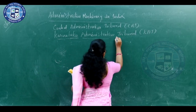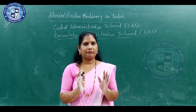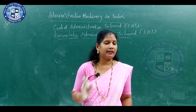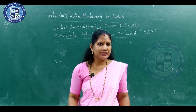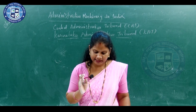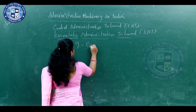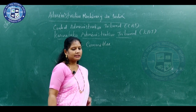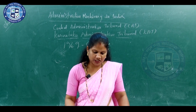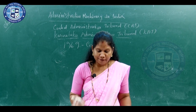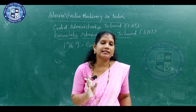Karnataka Administrative Tribunal, in short form called KAT. The pendency of service matters before the High Court and Supreme Court became a pressing problem. As early as 1969, a committee was set up by the central government under the chairmanship of Mr. Justice Shaw of the Supreme Court to make ways and means for effective, expeditious, and satisfactory disposal of matters relating to civil service.